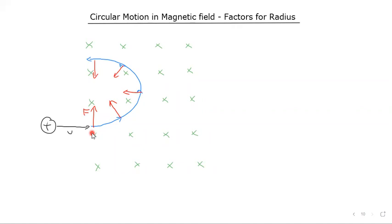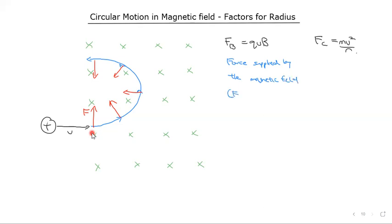So why does it undergo circular motion? We discussed earlier that it experiences a force from the magnetic field, which we calculate as qvB, with theta being 90 degrees in this instance. We understand from our circular motion that what you need is a central force, which is mv² over r. The force applied by the magnetic field is always perpendicular to the velocity, and this is the force required to undergo circular motion.